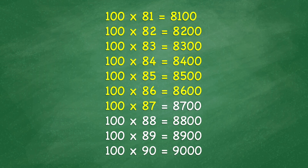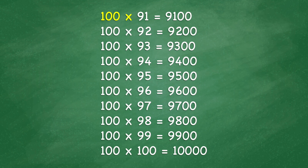100 times 87 equals 8,700. 100 times 88 equals 8,800. 100 times 89 equals 8,900. 100 times 90 equals 9,000. 100 times 91 equals 9,100. 100 times 92 equals 9,200. 100 times 93 equals 9,300. 100 times 94 equals 9,400. 100 times 95 equals 9,500. 100 times 96 equals 9,600. 100 times 97 equals 9,700. 100 times 98 equals 9,800. 100 times 99 equals 9,900. 100 times 100 equals 10,000.